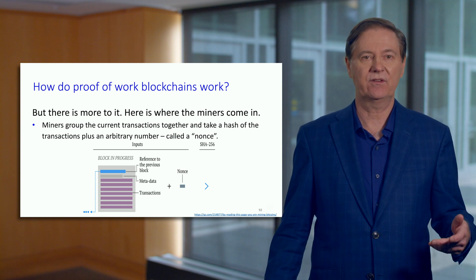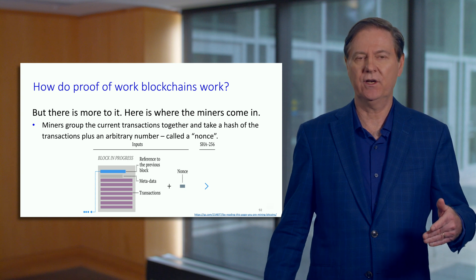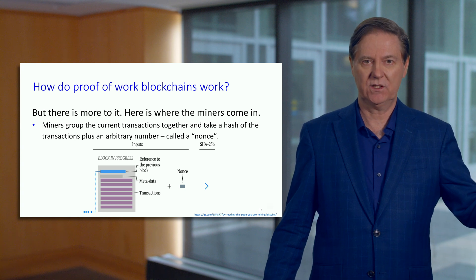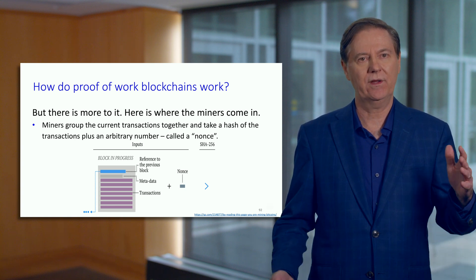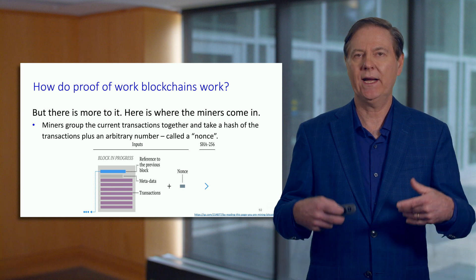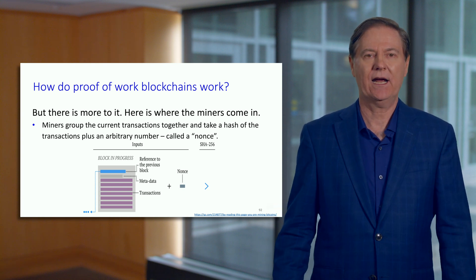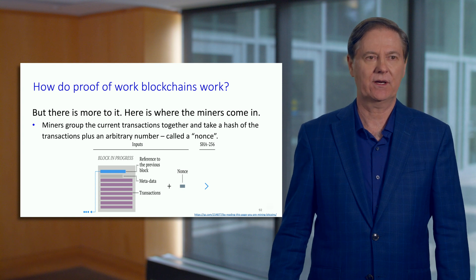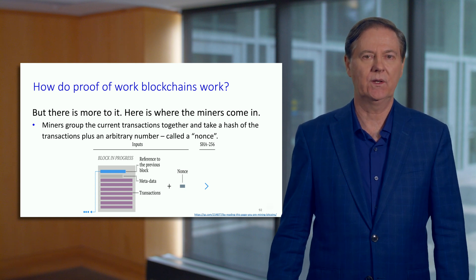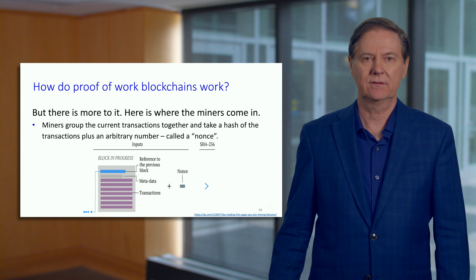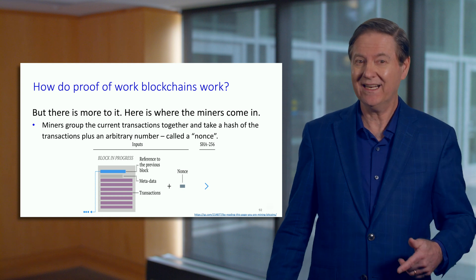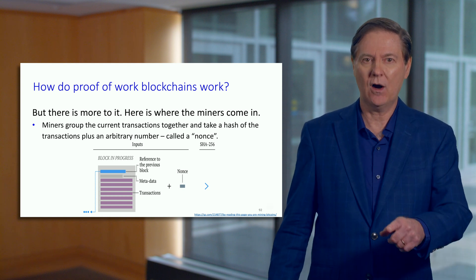The miner gathers candidate transactions sitting in something called the memory pool — transactions that are not confirmed yet and not yet on a blockchain. The first thing the miner does is verify the transactions, which is easy: they check whether the person spending actually has the token to spend. Once they've verified, they put a group of transactions together. Then, rather than just running a hash and posting it to the blockchain, the miners are actually looking for a special hash — one that's got a lot of leading zeros. That's the reason I showed you four leading zeros.